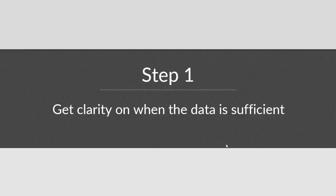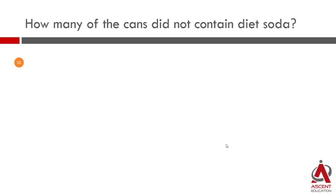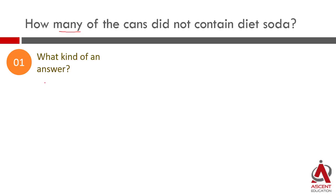As with all data sufficiency questions, the answer we need is: how many of the cans did not contain diet soda? So if you are able to say that, in the 18 cans, 7 cans are not diet soda, then the data is sufficient. The answer to this question is going to be a number — the number of cans that do not have diet soda. The answer is finally going to be a number, an integer.